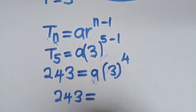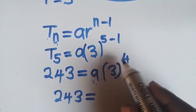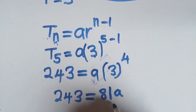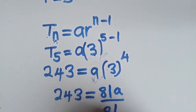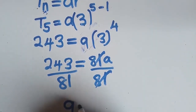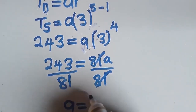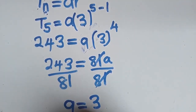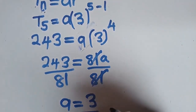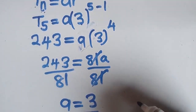You divide both sides by 81. This cancels out, and finally you get A equal to 3. So the first term is 3, and the common ratio is also 3. This is how you get to answer this question.